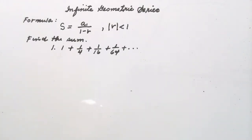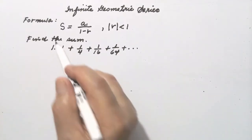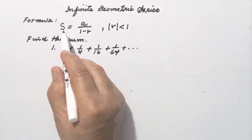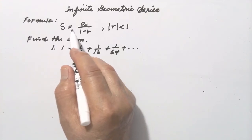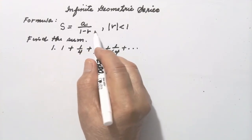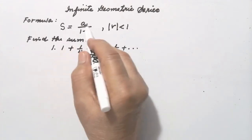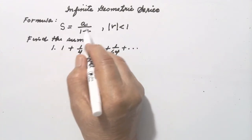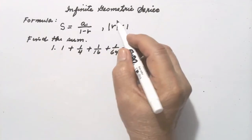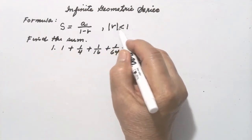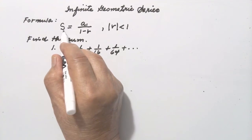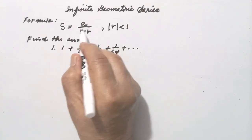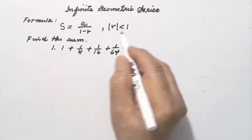Our topic for today is about infinite geometric series. This is the formula for finding the sum of an infinite geometric series: S is equal to a sub 1 over 1 minus r, where the absolute value of r is less than 1. S represents the sum, a sub 1 is the first term, and r is the common ratio.